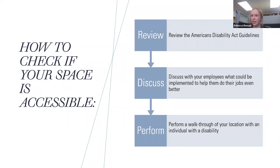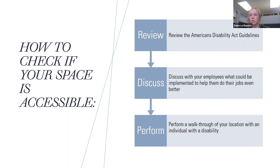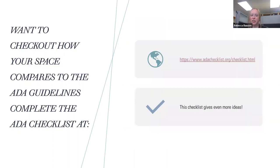To check if your space is accessible, review the Americans with Disabilities Act guidelines, discuss with your employees what would help them do their jobs better, and perform a walkthrough of your location with an individual with a disability — ask them what they would change and actually take those suggestions into consideration. I highly suggest using the ADA checklist, and even encourage taking it to places you don't own. It not only gives the standard but also offers ideas on how to fix issues, whether expensively or more cheaply.